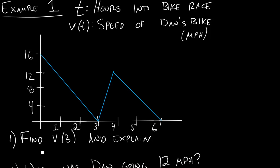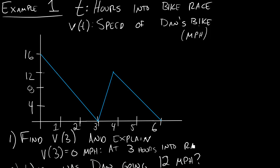We don't just write V of 3 equals 0. We'd write 0 miles per hour, and then let's write the story too. We would say: at 3 hours into the race, Dan is going 0 miles per hour — not moving at all. In this question, they gave us an input and asked us to tell them the output. Let's look at the next question.